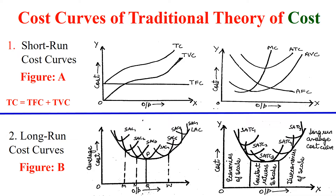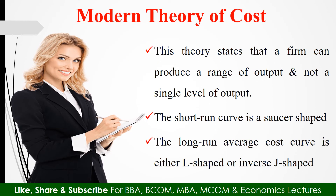The traditional theory of cost is shown in these two figures. Next comes the modern theory of cost. This theory states that the firm can produce a range of outputs and not a single level of output as under the traditional theory. The short run cost curve in this case is saucer-shaped, whereas the long run average cost curve is either L-shaped or we can say it is an inverse J-shaped curve.